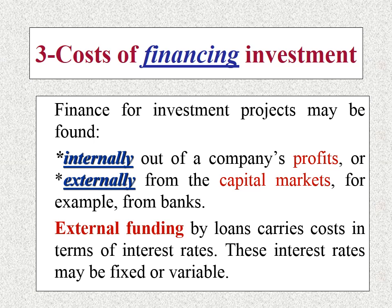We have two types of costs: internal cost for financing your project and external cost for financing your project. Let's start with external funding — financing your project from the capital markets, for example taking loans from banks. It is quite obvious that loans carry costs, and these costs take the shape of interest rates, which might be fixed or variable. If you finance your project with a loan of one million pounds, the cost is the interest you pay to the bank — for example 150,000 pounds.